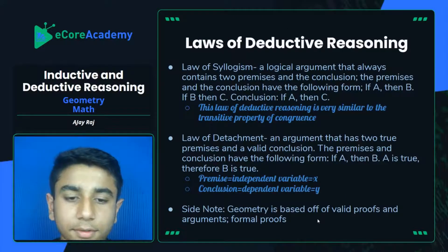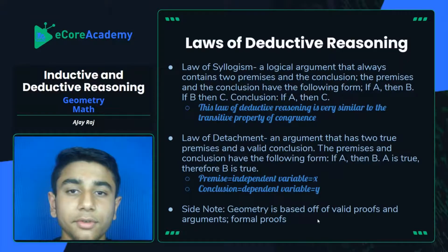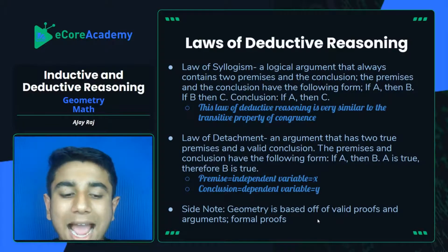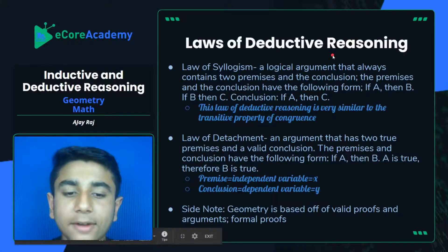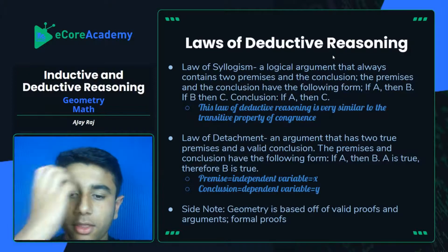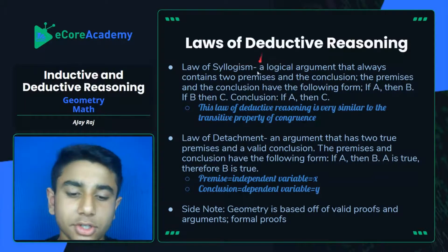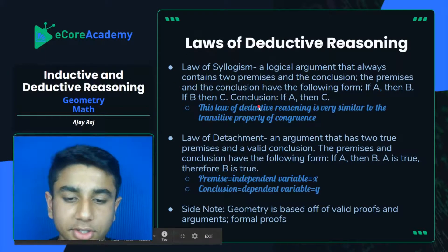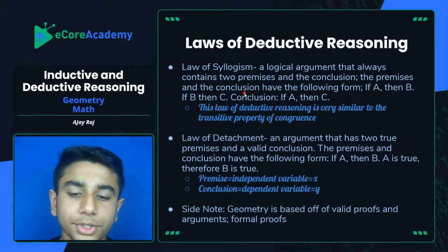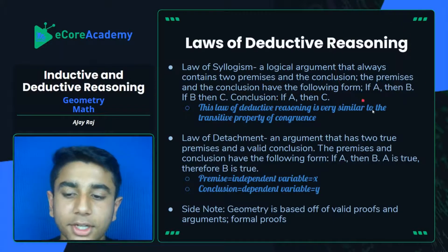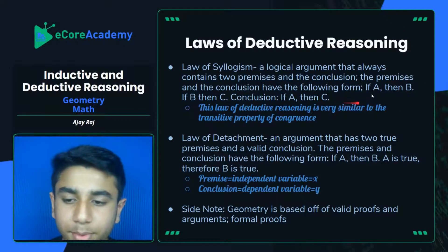Finally, we have the laws of deductive reasoning — the principles that all parts of deductive reasoning must follow. There are two laws: the law of syllogism and the law of detachment. The law of syllogism is a logical argument that always contains two premises and a conclusion. The premises and conclusion follow this form: if A then B; if B then C; conclusion: if A then C.